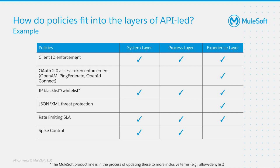Let's now look into an example of which policies make sense within the API-led approach. Client ID enforcement should always be the minimum for all your APIs. OAuth 2.0 is the standard for external APIs and should be applied to experience APIs. IP deny listing and allow listing is not bounded to a specific layer of APIs. JSON and XML threat protection is highly recommended for external APIs in the experience layer. Rate limiting SLA-based can be easily applied to all layers. And as mentioned, the spike control policy can lead to a bad user experience if applied to an experience API, so it is recommended only for system and process APIs. This is just an example and it will vary based on use case and requirements — take it as inspiration and modify it to fit your needs.